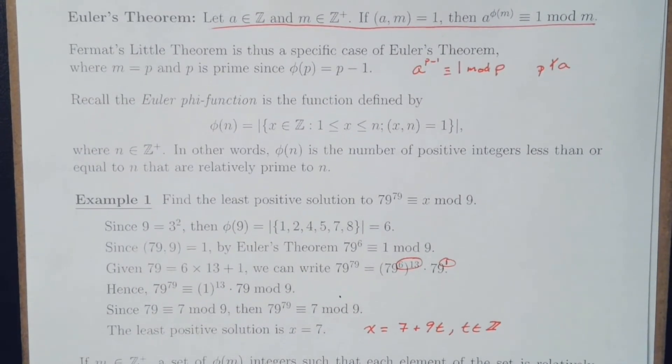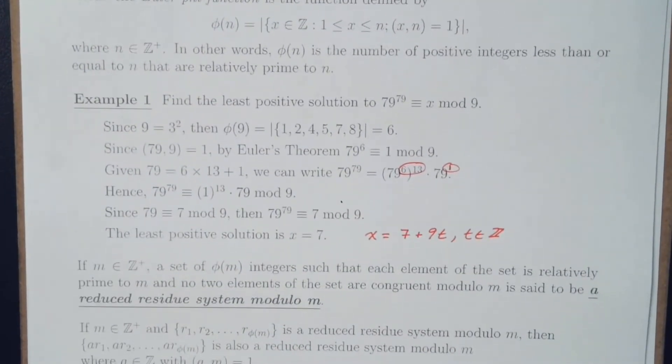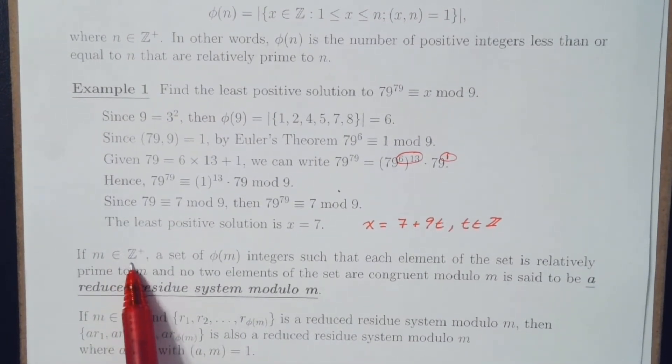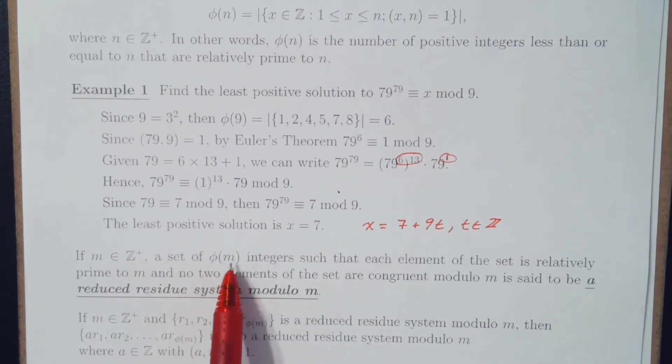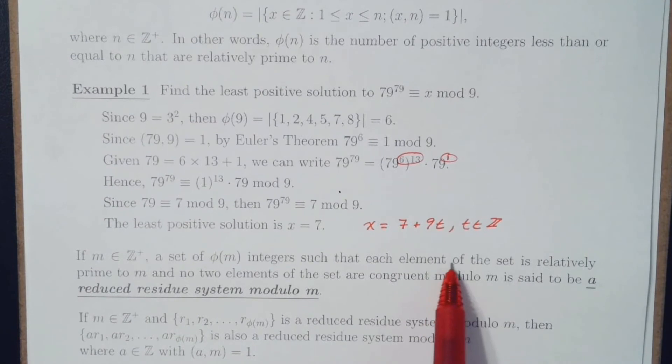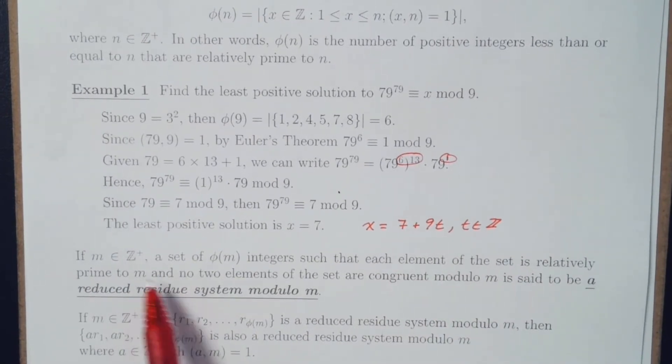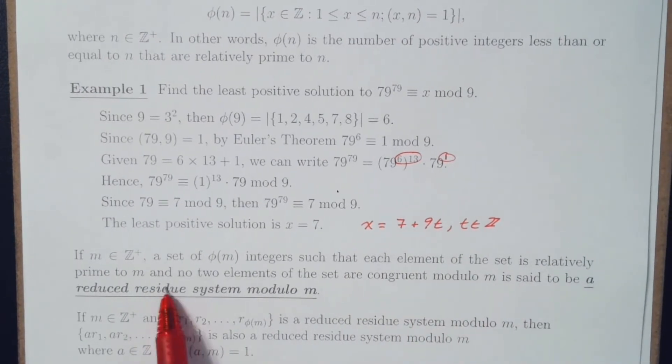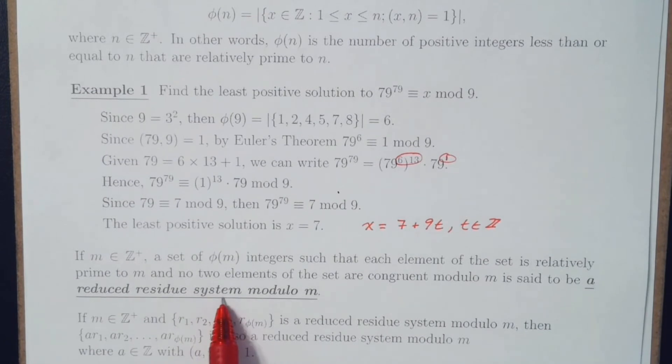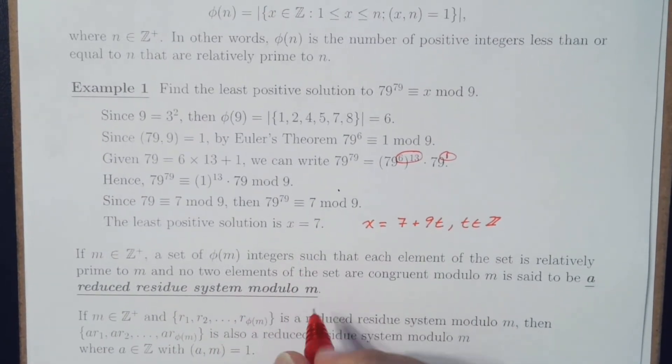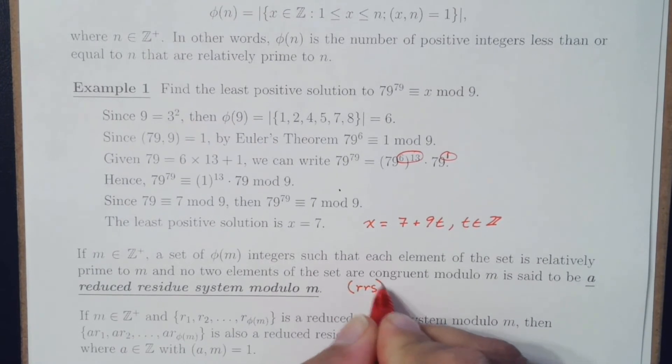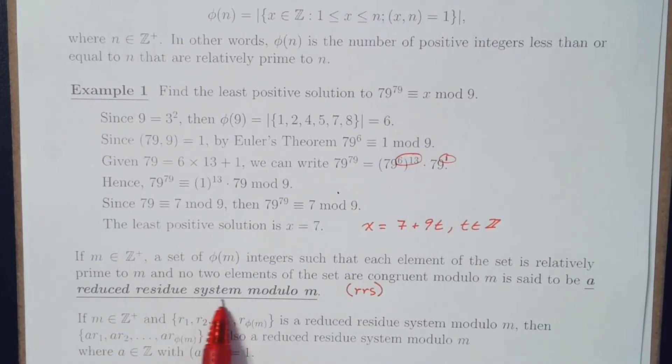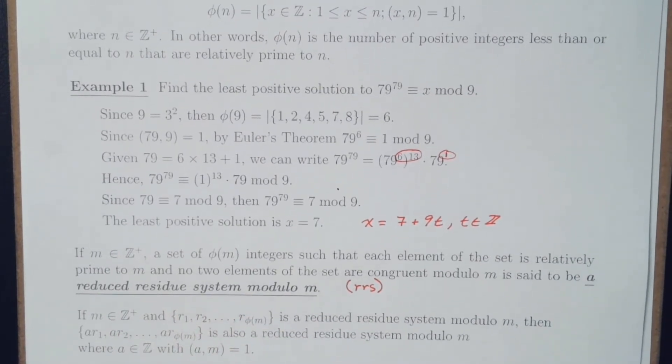Now, let's look at our next information. If m is a positive integer, then a set of phi of m integers such that each element of the set is relatively prime to m and no two elements of the set are congruent modulo m is said to be a reduced residue system modulo m.